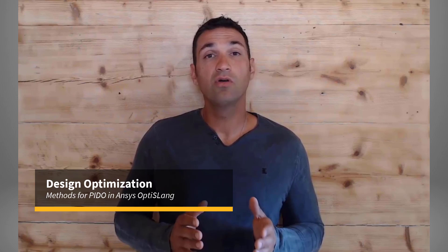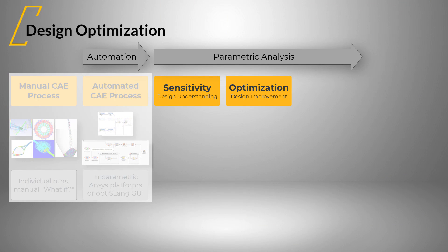We have discussed the process integration. Now we will focus on design optimization, which contains the methods of sensitivity analysis and optimization. Before we start with the methods themselves, we will explain three important terms for design optimization. This will help us to better understand the optimization problem.